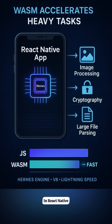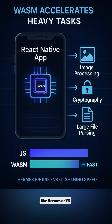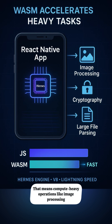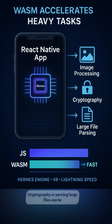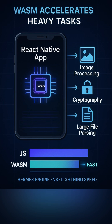In React Native, WASM works by running through the JavaScript engine, like Hermes or V8. That means compute-heavy operations — like image processing, cryptography, or parsing large files — can be handled efficiently without freezing the UI.